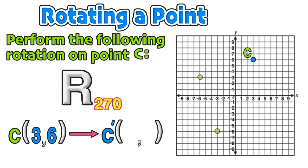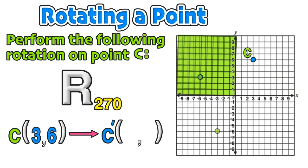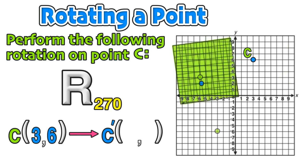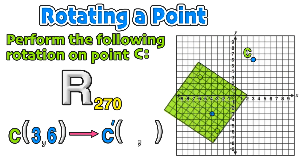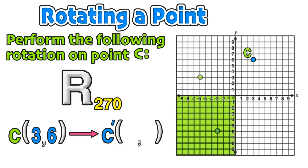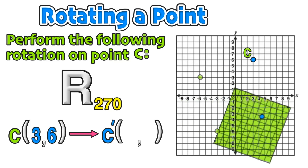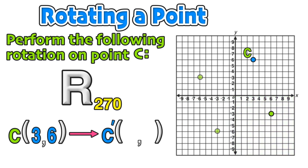If the degrees of rotation was 270, we complete the same process but now we need three quarter turns. Start with C in the first quadrant: one quarter turn is 90 degrees, a second quarter turn is 180 degrees, and a third quarter turn counterclockwise is 270 degrees, giving us the coordinates of the new image C′ at (6, −3).